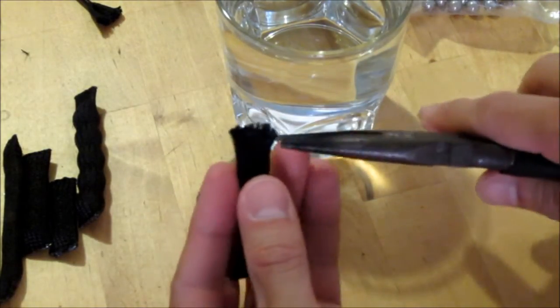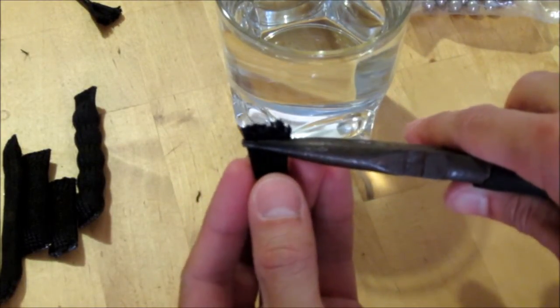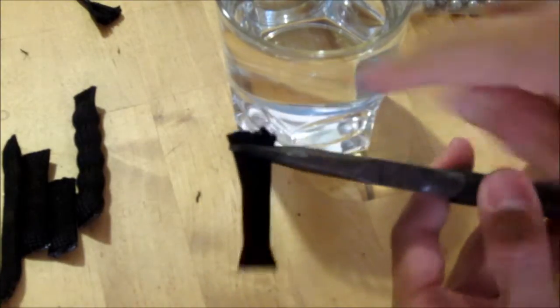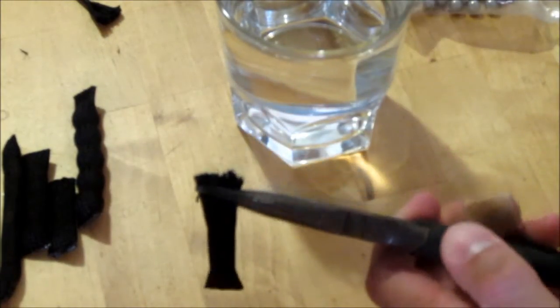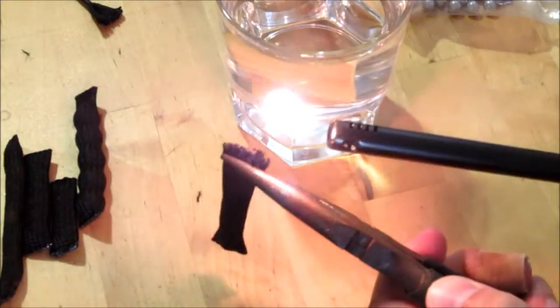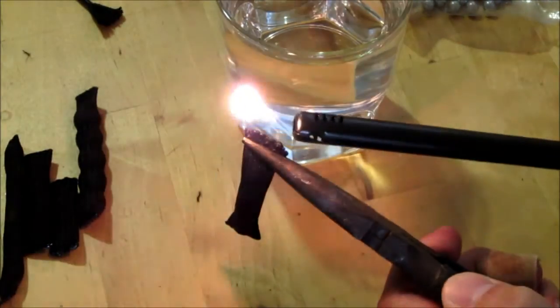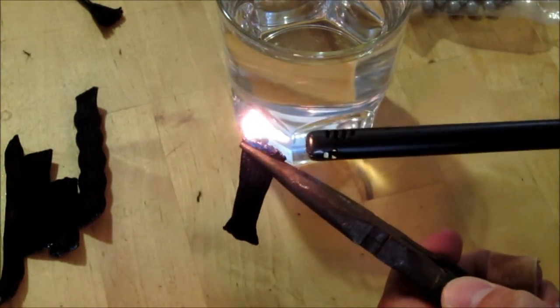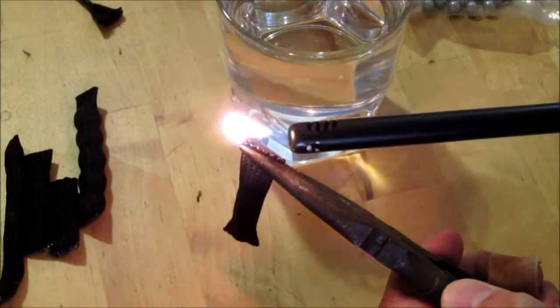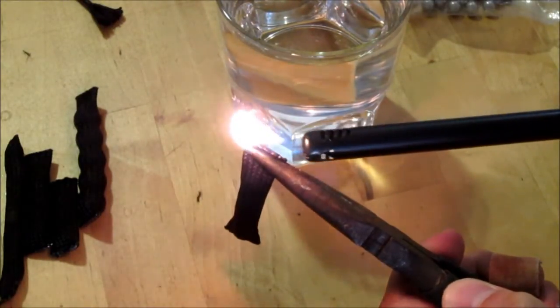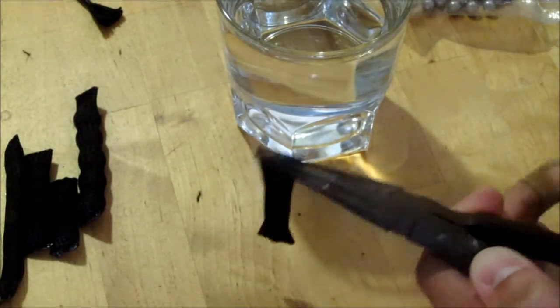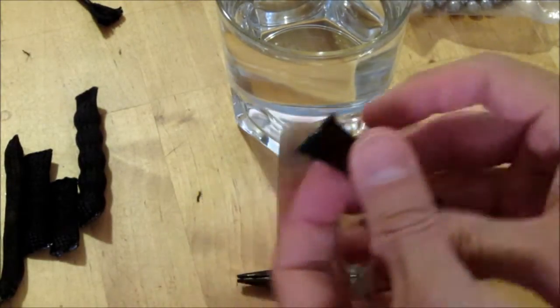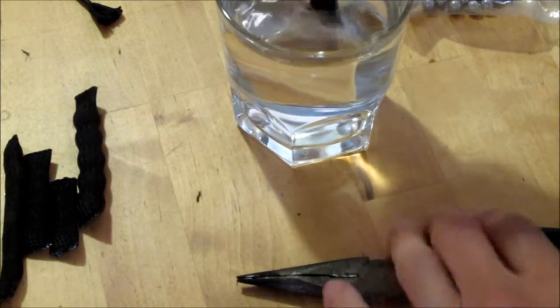Squeeze them all down to the end. Grab the pliers, hold on to the open end, leaving a little space there, some material to melt. Take our flame, melt that closed. Probably want to do this in a well ventilated area because melting plastic does give off some nasty fumes. Dip that in water to cool it off.